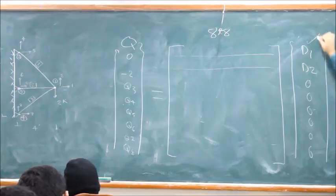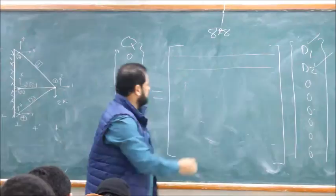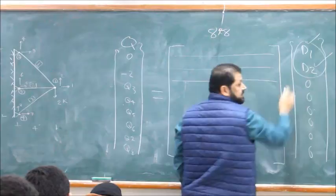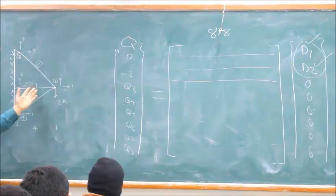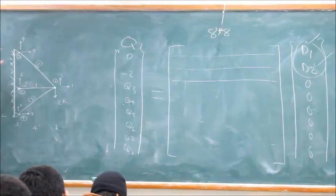Once you find D1 and D2, you can calculate all the other reactions. Q3 equals the third row times the displacement vector. Then you calculate Q3, Q4, Q5, Q6, Q7, and Q8. Now we have calculated the node displacements for the structure in the global direction — the X and Y direction — and we have calculated the reactions.